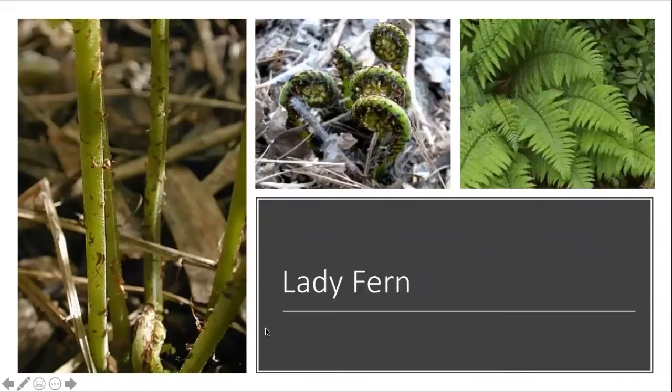Next is the lady fern. Lady ferns have fiddleheads with black hairs that are also on the adult plant — they look like a lady's hairy legs, so that's how you can remember lady fern. Ferns grow in damp environments. This could be anything from growing up in trees, on rotting logs, in the dirt, or through rocks. The ferns that we're going to be finding in Wisconsin are going to be on damp, bare soil, because that's where it's easiest for their spores to take root.